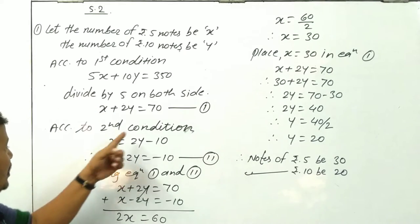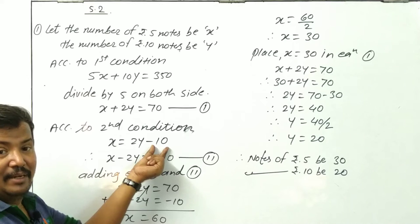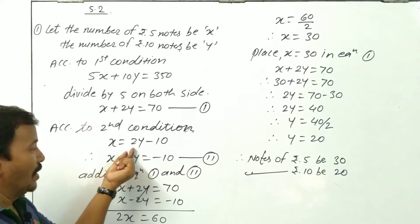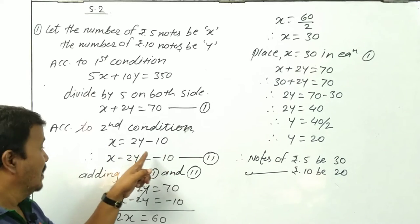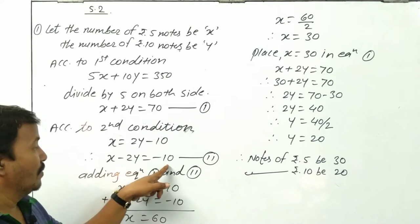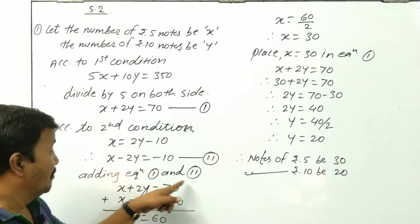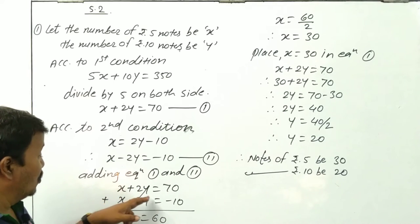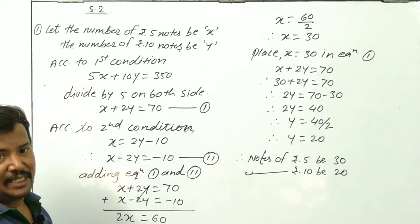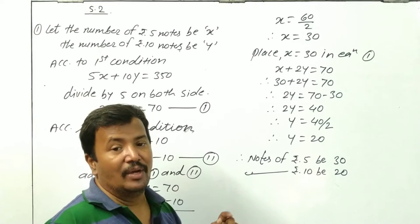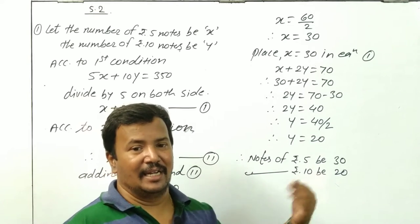According to the second condition, x is equal to 2y minus 10. Rearranging: x minus 2y is equal to minus 10. This is Equation 2. Now adding Equation 1 and Equation 2: x plus 2y equals 70, plus x minus 2y equals minus 10. The 2y terms cancel, giving 2x equals 60, so x is equal to 30. Therefore there are 30 notes of 5 rupees.